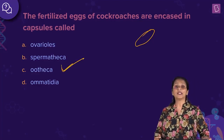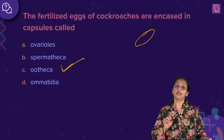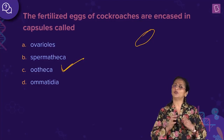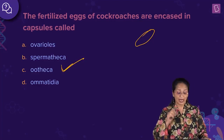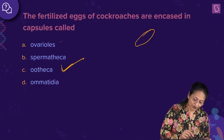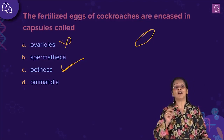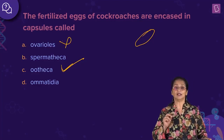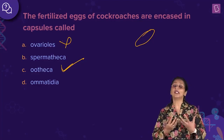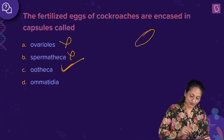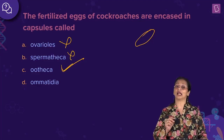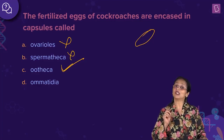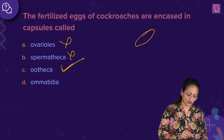The right answer is C — oothecae. What about A, ovarioles? Ovarioles are the ovarian tubules. A pair of ovaries in the female reproductive system of the cockroach have ovarian tubules called ovarioles — so this is wrong. Spermathecae are found in the sixth segment of the female cockroach's reproductive system, where it receives and stores sperms — this is also wrong. What about ommatidia? These are nowhere connected to reproduction — they are the units of the compound eye. Each compound eye has about 2000 hexagonal units called ommatidia. So this is also wrong. The right answer is C, oothecae.